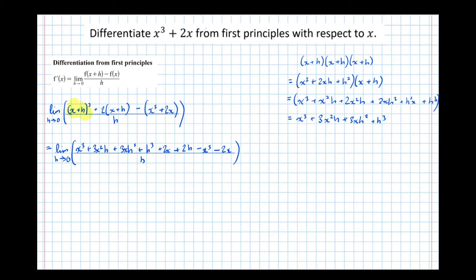I'm looking for the things that cancel out now, so we've got a plus x cubed here and a take x cubed there, we've got a plus 2x there and a take 2x there, and now what it's telling us to do, if we look at this denominator here, it's telling us to divide what's left by h.